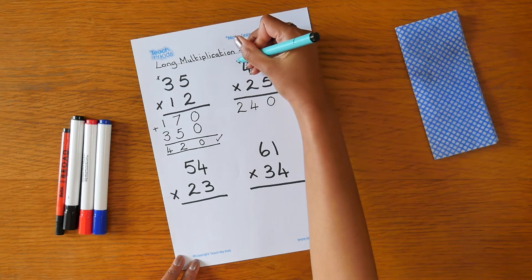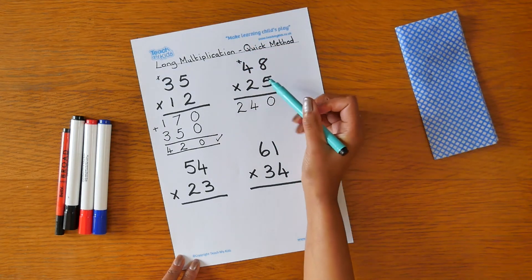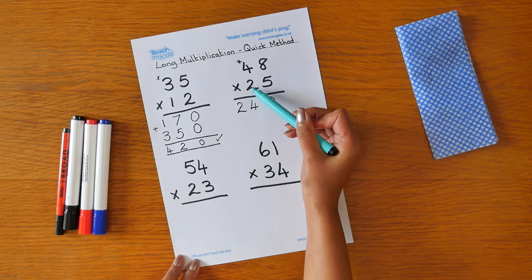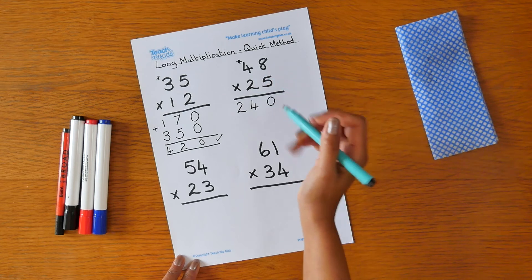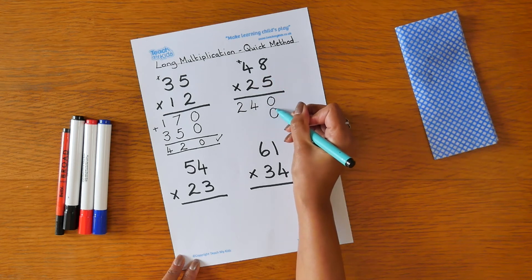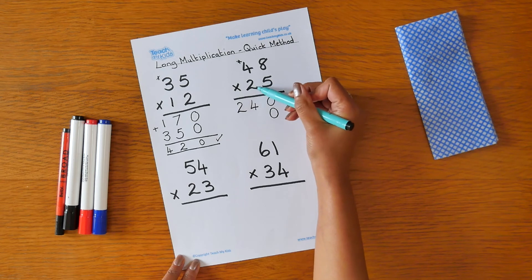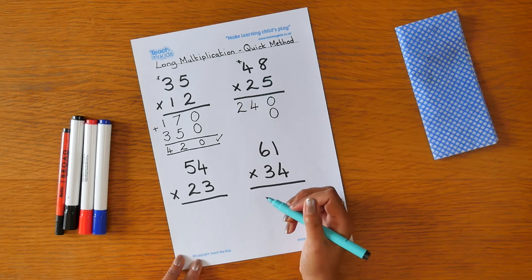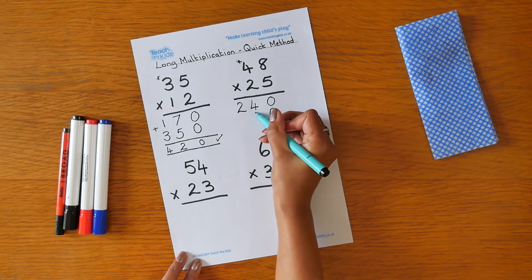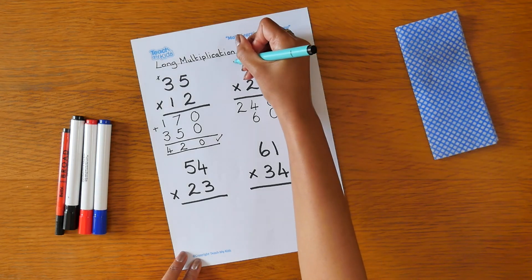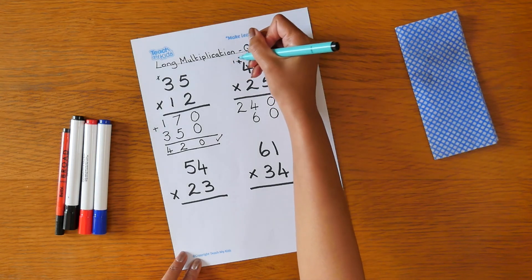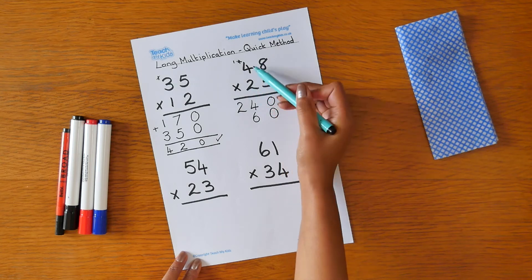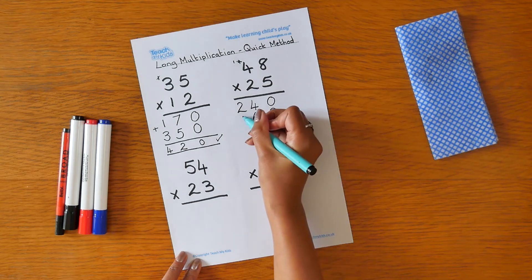Now we multiply 5 times 4 is 20 plus 4 is 24. I'll cross out the 4 because I've used it. We're now multiplying 2 times 8, but remember it's really 20 times 8. So we're going to put our 0 in first, and now we can do 2 times 8 is 16. So we place our 6 here and we need to carry the 1.